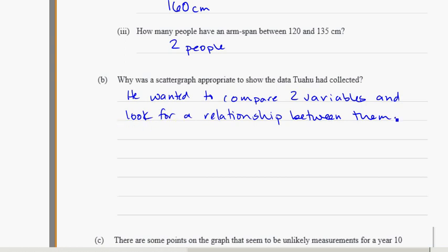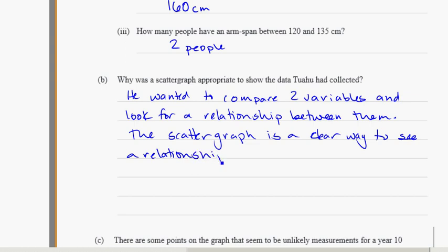The scatter graph is a clear way to see a relationship, if there is one, between height and arm span.